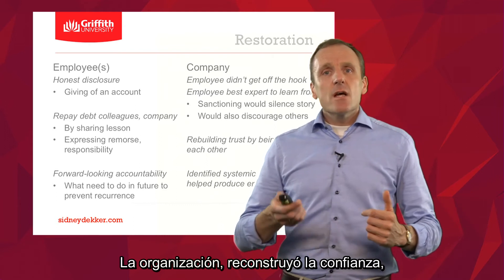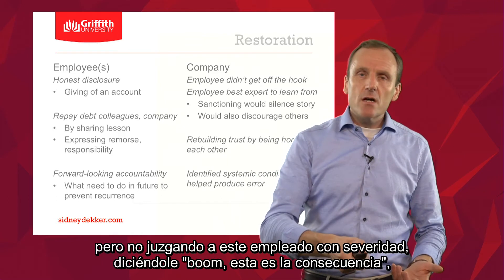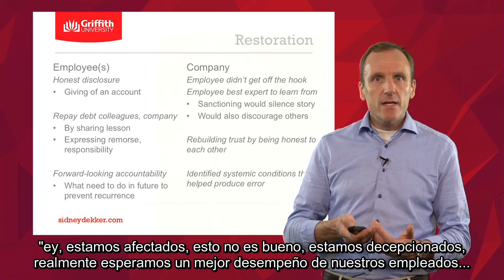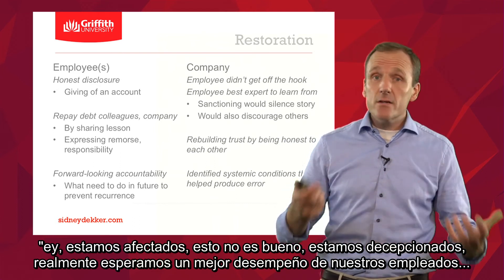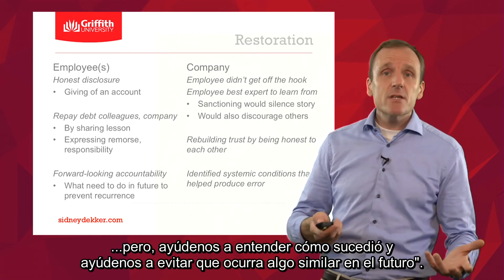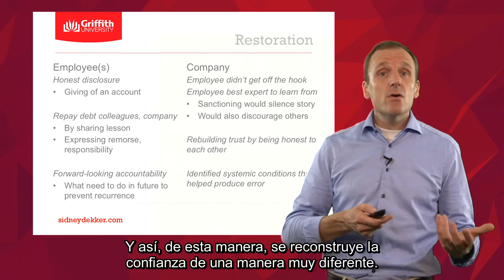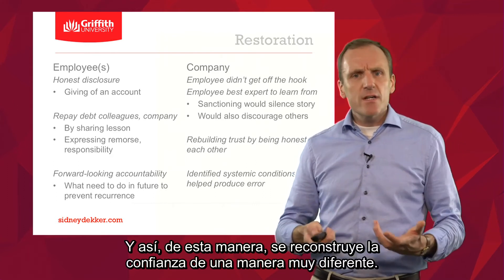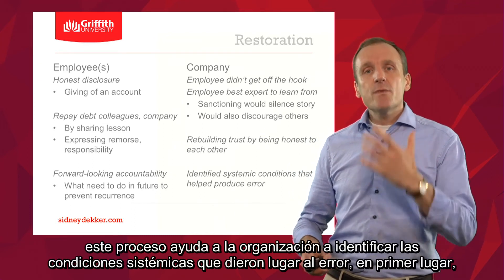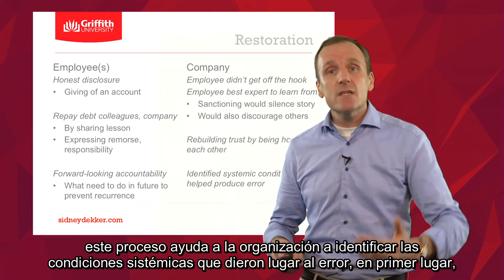The organization understood that sanctioning this employee would exit the story out of the organization, or at least silence it if the man stayed. It would also discourage others from similarly sharing their story. The organization rebuilt trust — not by coming down hard on someone, but by being honest: 'We're really upset, this is not good, we're disappointed, we really hope to see better performance. But help us understand how it happened, and help us get the confidence that it won't happen again in the same way.' And most importantly, this process helped the organization identify the systemic conditions that gave rise to the error in the first place.